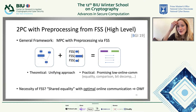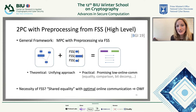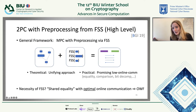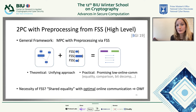One can ask: is FSS necessary, or is this overkill? We don't have a full answer, but for a certain type of gate — calling it shared equalities, like an equality match — if you have optimal online communication like we achieve in our transformation, then this actually implies one-way functions, which in a sense does imply DPFs, which is the FSS we use for that case. So it does seem to be the case that for getting really cheap communication complexity for certain types of gates, you do need cryptographic tools comparable to function secret sharing.